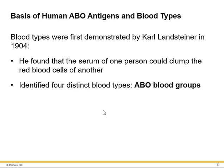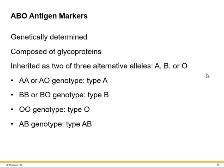When you have the wrong blood type reacting with the type that you have, a reaction occurs. The blood types were first demonstrated by Carl Landsteiner in 1904, and he found that the serum of one person could clump the red cells of another, identifying four distinct blood types called the ABO blood groups.